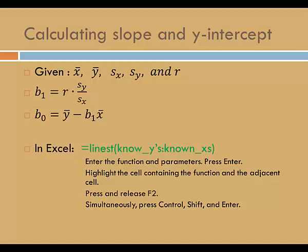Here's how you do that. Enter the function and parameters in one cell, and then press Enter. Then highlight the cell containing the function and the adjacent cell. Press and release F2. Then, simultaneously press Ctrl, Shift, and Enter. Excel will return the slope in the first cell, and the y-intercept in the second.